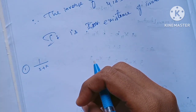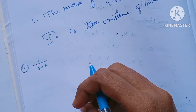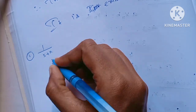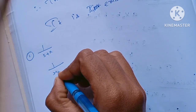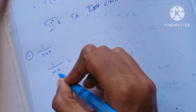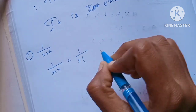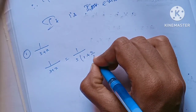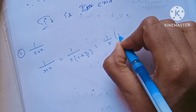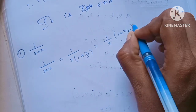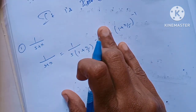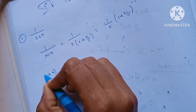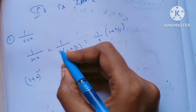For the first question, we have 1/(5+x). We take 5 as the common value and factor it out. So we get (1/5) times (1 + x/5) to the power of minus 1. We will use the formula for (1+x) to the power of minus 1.